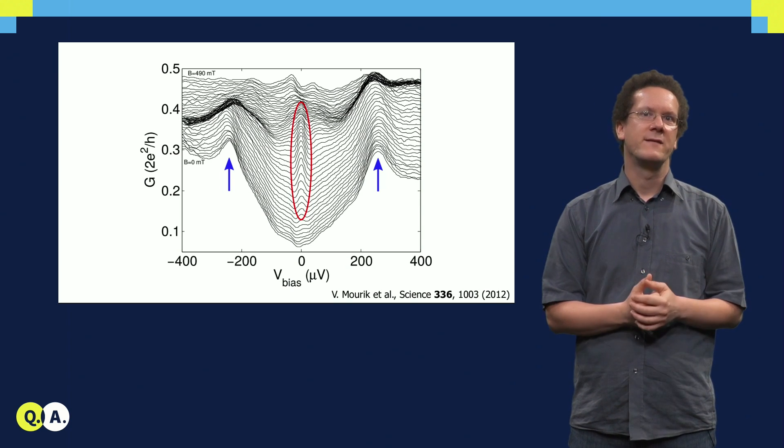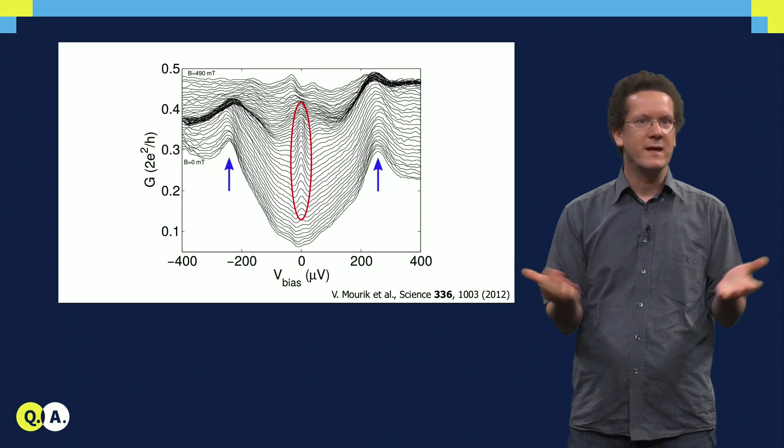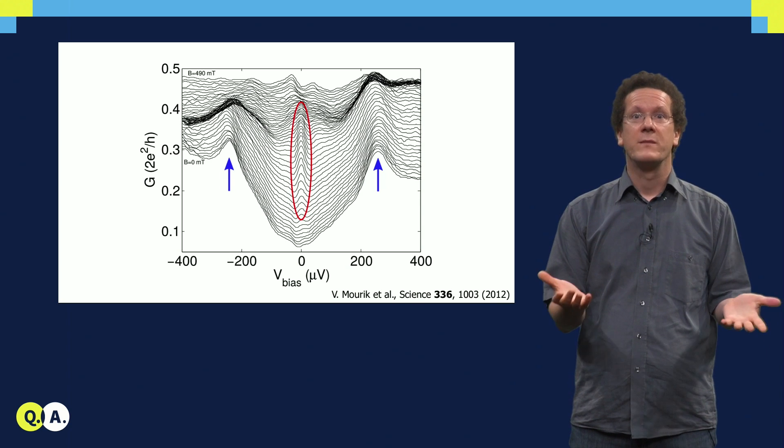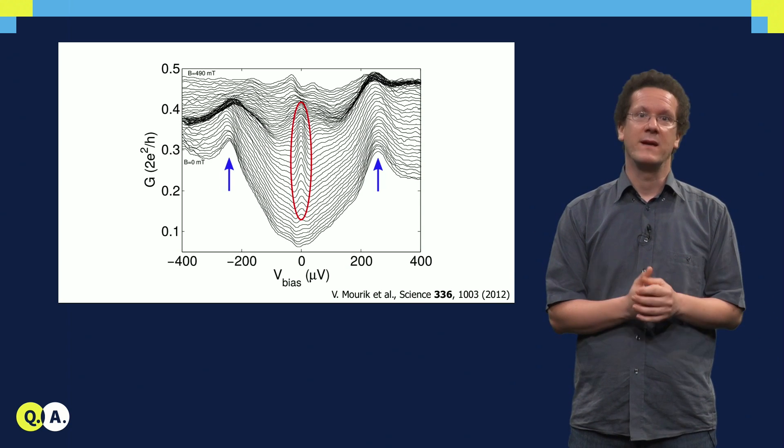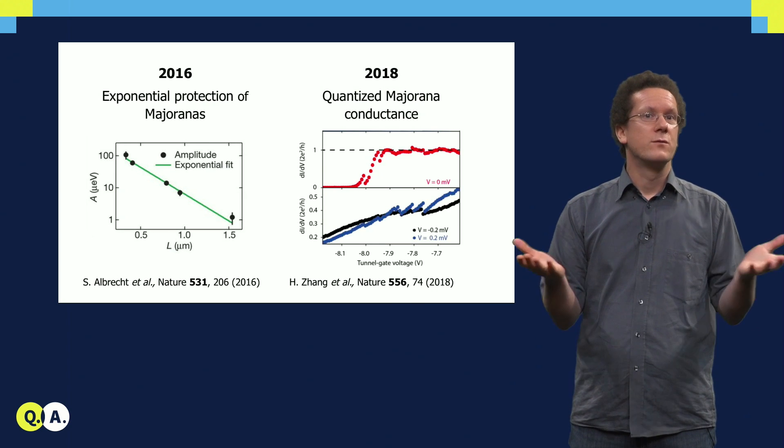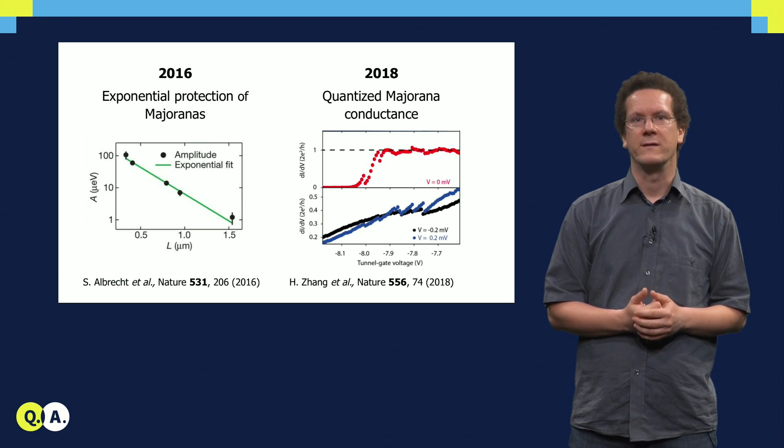Now, this was already six years ago. The signatures then were non-ideal, the peak is not quantized as we might have hoped for, and also there are other effects that might induce a peak at zero bias besides Majoranas. However, since 2012, experimentalists have worked very hard on establishing Majoranas more firmly in these systems.